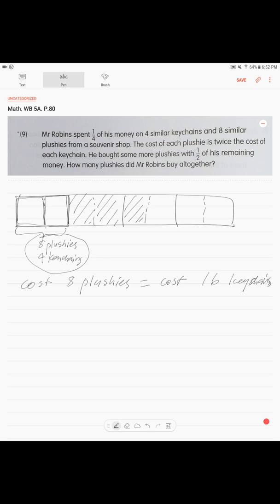So we want to forget about, we want to think about all plushies in terms of keychains. So now we have 16, we just represented our eight plushies as 16 keychains. So this becomes 16 keychains.